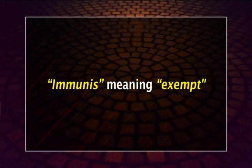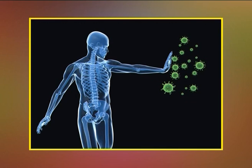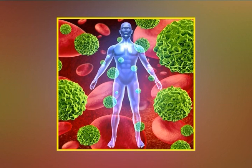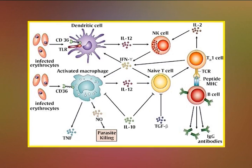The concept of immunity grew out of observations that individuals who had recovered from certain infectious diseases were thereafter protected from the disease. Immunity is derived from a Latin word 'immunus' meaning exempt. Immunity is the ability of an organism to resist infection by pathogens, or a state of protection against foreign organisms or substances — the capability of the body to recognize foreign material and mobilize cells and cell products to remove it.